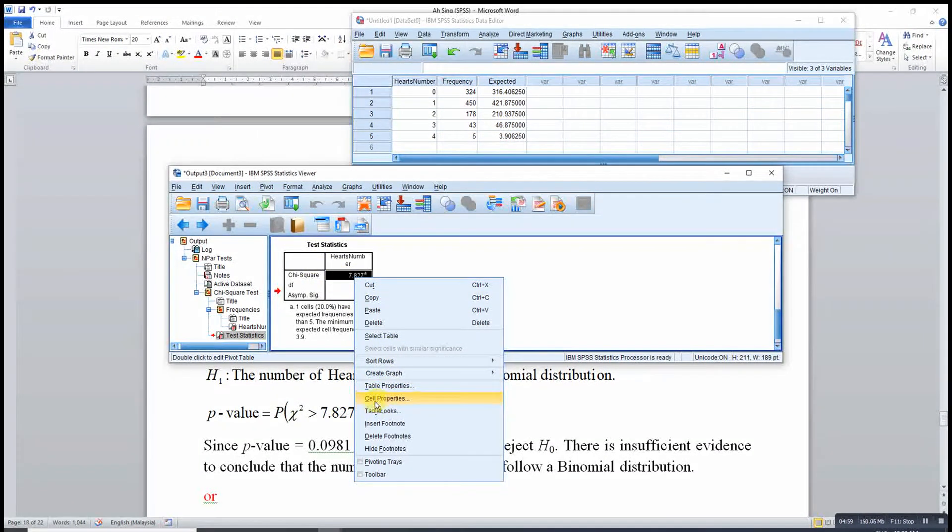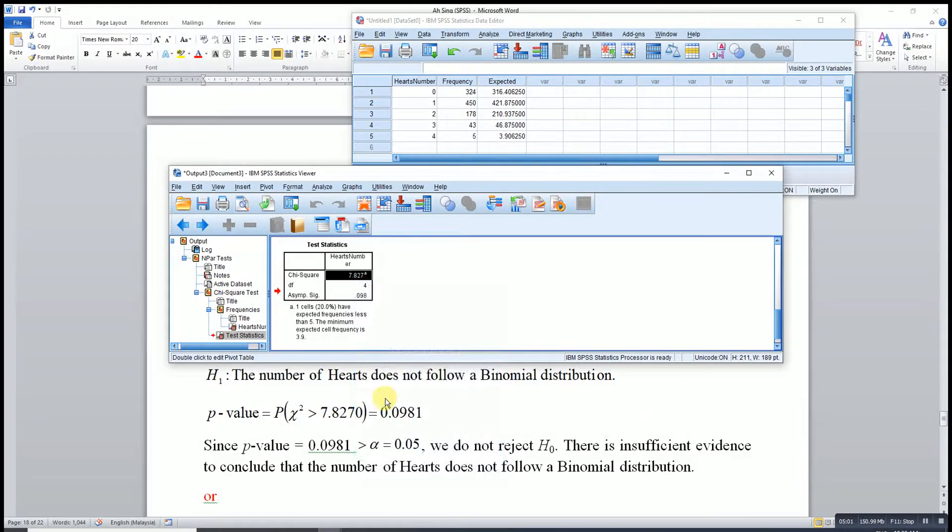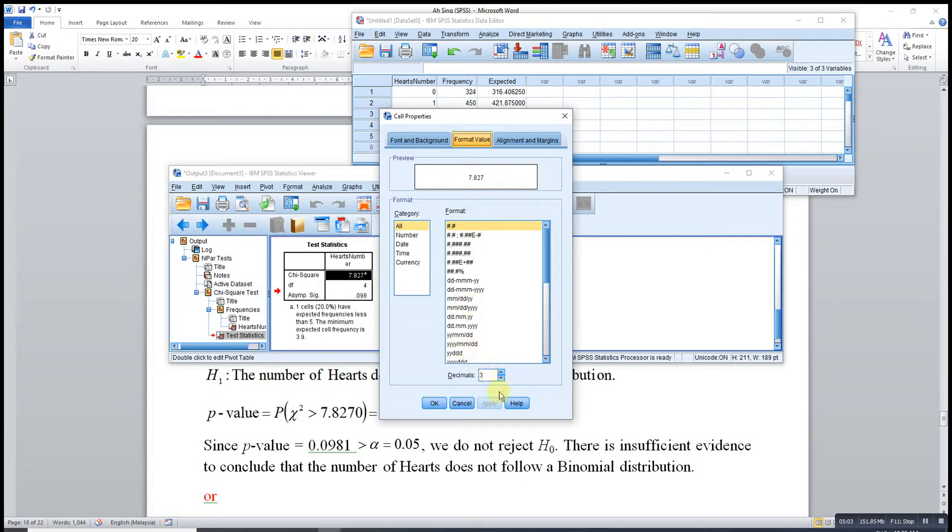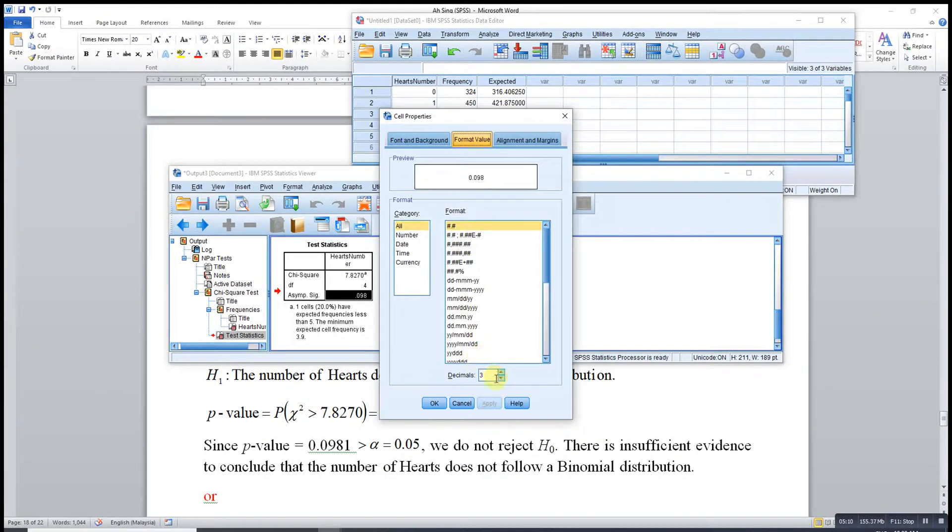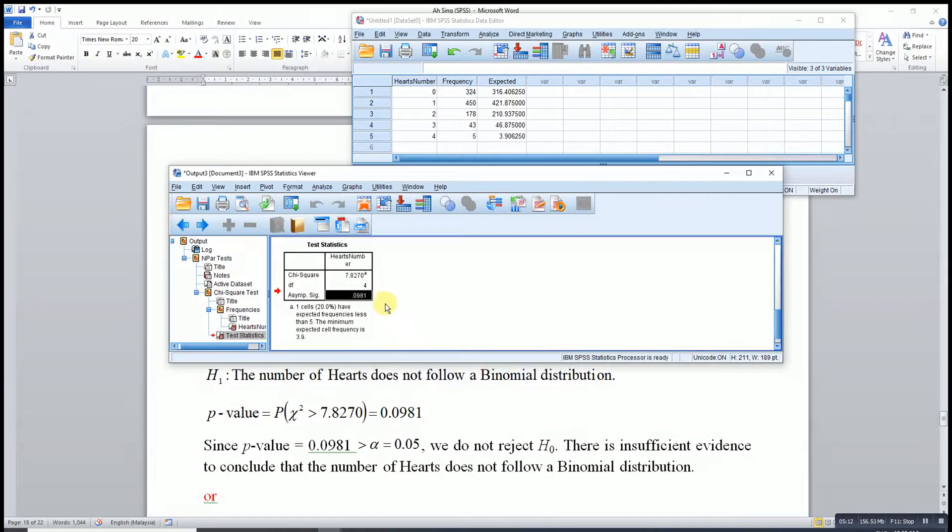Go to Cell Properties, change to 4 decimal places, and apply to this.